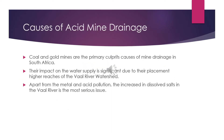We can see the causes of acid mine drainage here. Coal and gold mines are the primary causes of mine acid drainage in South Africa. The impact on water supply is significant due to the placement in the high reaches of the river watershed. Apart from water and acid pollution, the increase in dissolved salts in the river is the most serious issue.